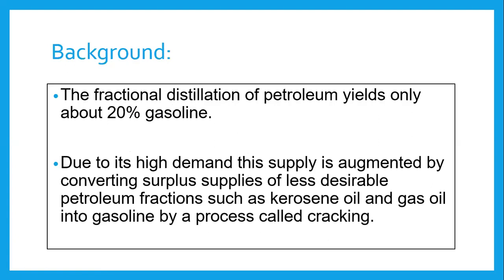Due to high demand, the supply is augmented by converting surplus supplies of less desirable petroleum fractions — such as kerosene oil and gas oil — into gasoline by a process called cracking. Kerosene oil and gas oil are higher hydrocarbons; they are cracked down and converted into gasoline, which is a lower hydrocarbon, to fulfill our energy requirements.